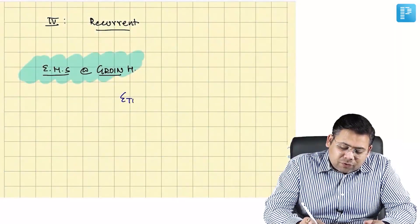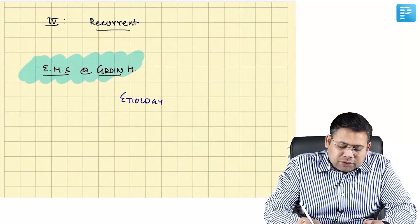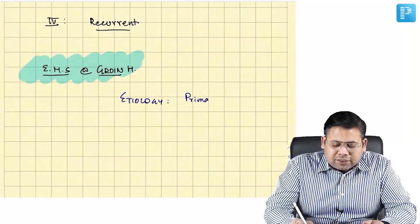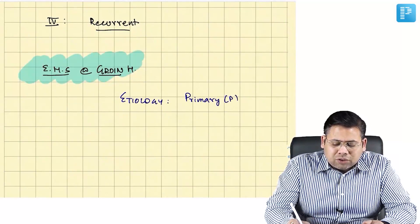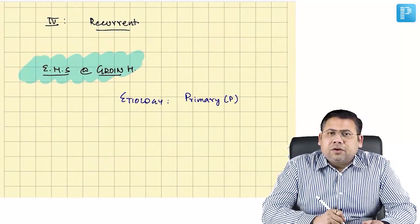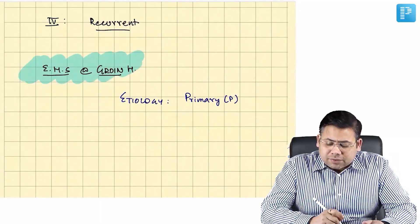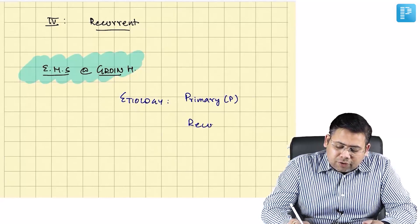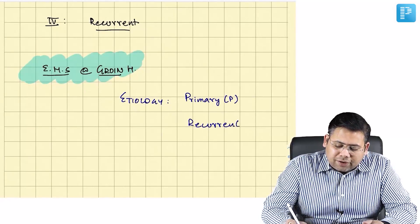E stands for etiology. It could be P for primary — if it is not associated with any particular cause — or it could be recurrent, if the hernia is happening again.